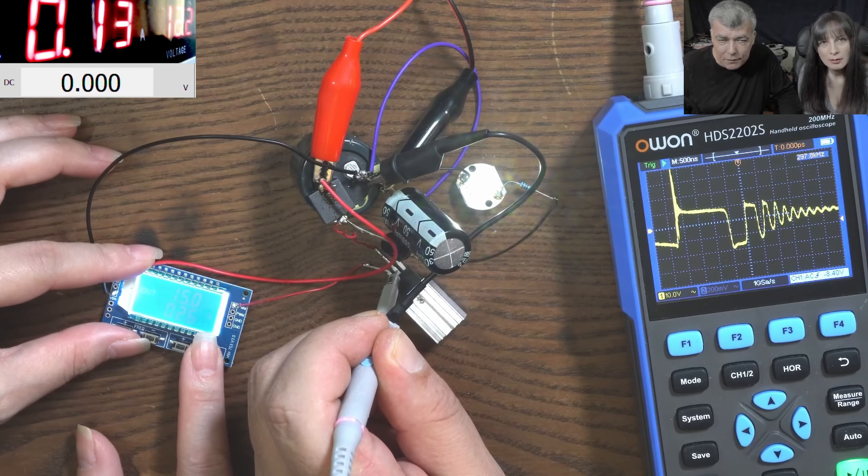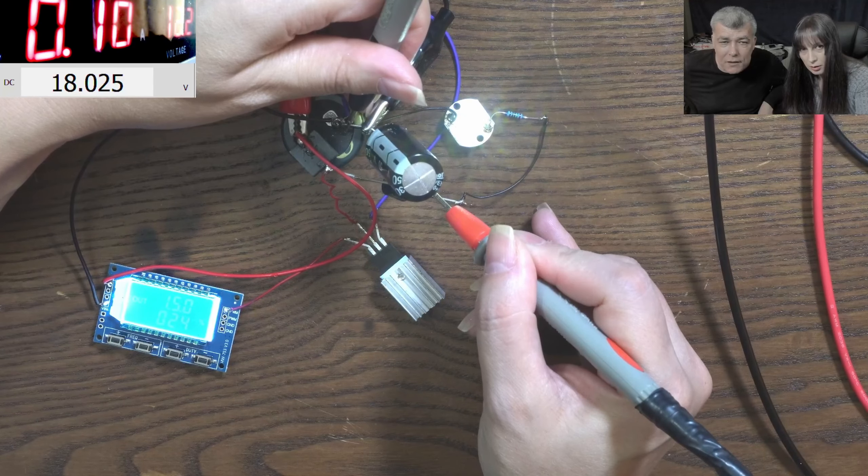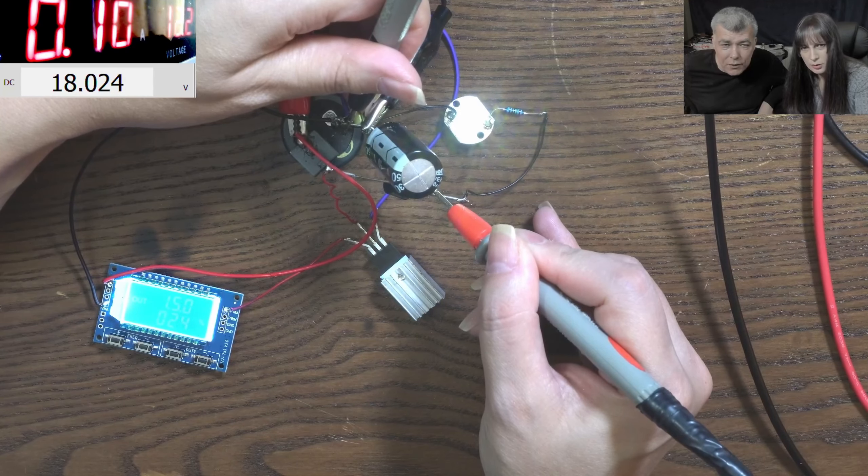You see it's 100 milliamps. Just to know from where we are starting. Let's check the voltage on the output from the capacitor, from minus to plus. Check please, from ground to here. And is? 18 volts.